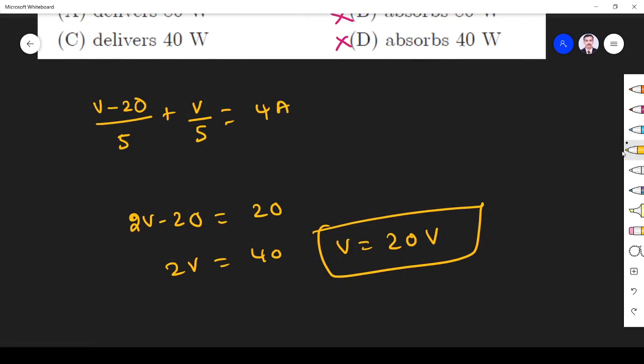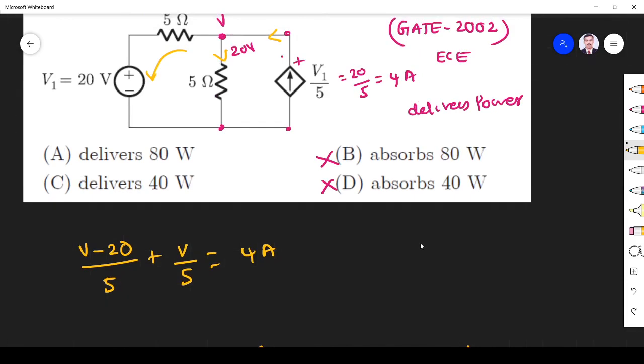So power delivered is equal to V is 20, I is 4. So it is 80 watts. I hope you understand this problem. If you have any doubt please ask me in comment section. I will clarify. Thank you.